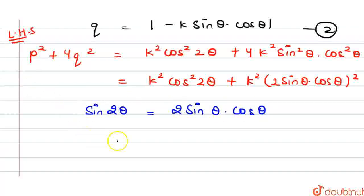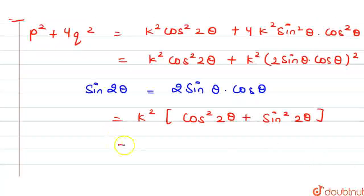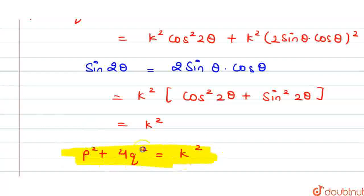By using this identity, taking k² common, the expression becomes k² times (cos²2θ plus sin²2θ). We know that sin²θ plus cos²θ equals 1, so this value equals 1. Therefore, p² plus 4q² equals k². Hence, we are done. Thank you!